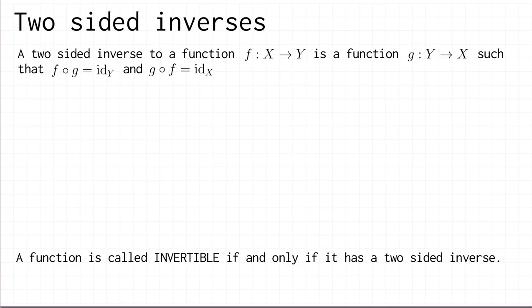The final definition is that of a two-sided inverse. A two-sided inverse to a function f from x to y is a function g going in the other direction from y to x, such that f composed with g is the identity on y and g composed with f is the identity on x. In other words, g is both a right and a left inverse to f.